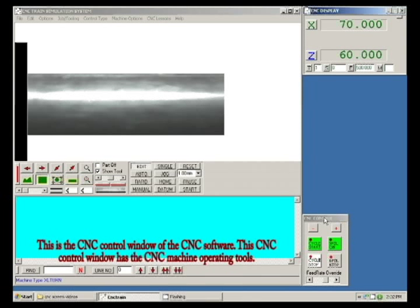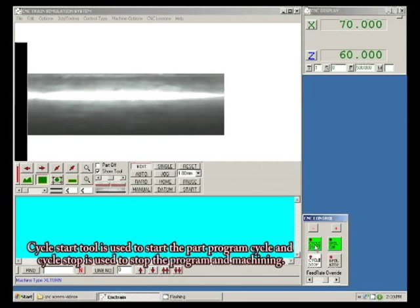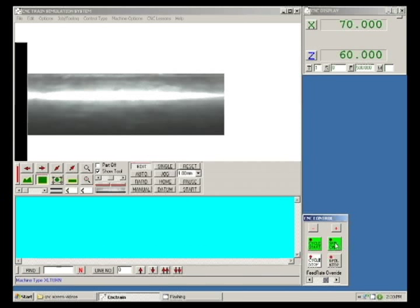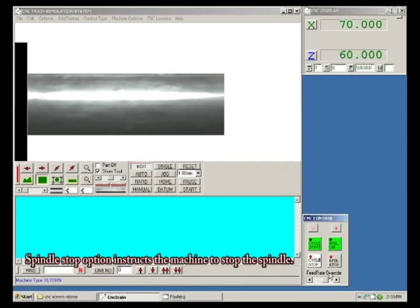This is the CNC control window of CNC software. This CNC control window has CNC machine operating tools. The minus and plus tools allow to move the tool in negative and positive directions of X and Z axis manually. Cycle start is used to start the part program cycle, and cycle stop is used to stop the part program and machining. Spindle clockwise instructs the machine to rotate the spindle in clockwise direction at specified RPM. Spindle stop instructs the machine to stop the spindle.